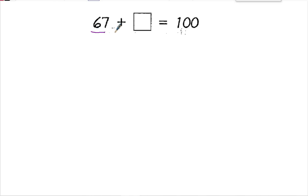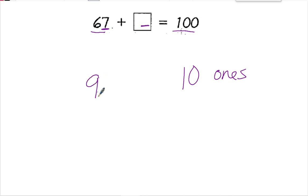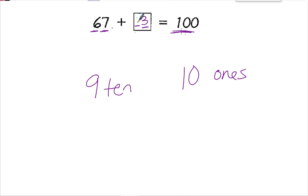So here I have 67 plus something equals 100. If you remember the trick to figure out what I'm missing: in the ones place, when I add the ones places together, they have to equal 10. In the tens place, it has to add up to equal 9. I need 9 tens and 10 ones to add up to equal 100. So 7 plus 3 equals 10, and 6 plus 3 equals 9. So my missing number is 33.